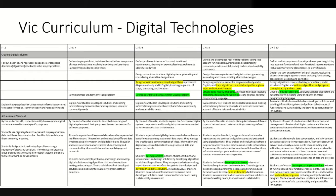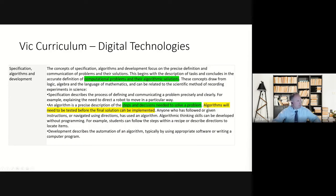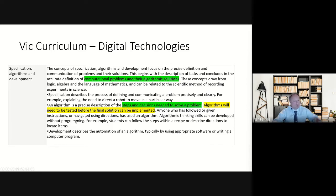Moving towards years nine and ten, you've got modular programming, it's getting a bit more complicated. We're introducing the term 'validation' into algorithms, and it mentions traces, testing, and trace cases — some formalized testing processes for students to undertake and really understand algorithms and the code they're writing. This is one of the key concepts in the Victorian Curriculum about algorithms: developing algorithms, computational thinking, testing before the final solution, making sure functional requirements are being met.